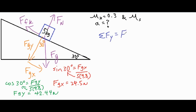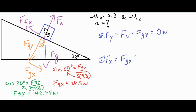The sum of forces in the vertical direction is the normal force upwards minus fgy, and that equals zero newtons because there's no acceleration in the perpendicular direction. The sum of forces in the x direction is fgx — making the object go down the ramp — minus the force of kinetic friction opposing the slide, and that equals mass times acceleration. Adding fgy to both sides gives us fn equals fgy.